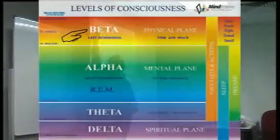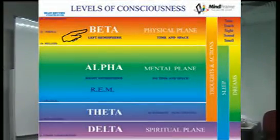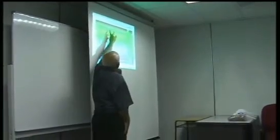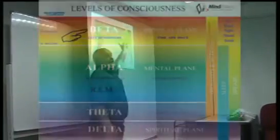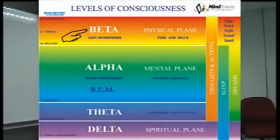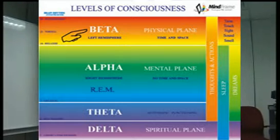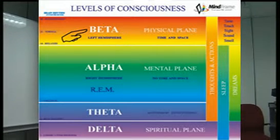This chart illustrates the different levels. From 14 to about 40 cycles per second, this is the brainwave beta — this is the left hemisphere. The brainwave is measured by the electroencephalograph, which is the machine that can measure brain activity.